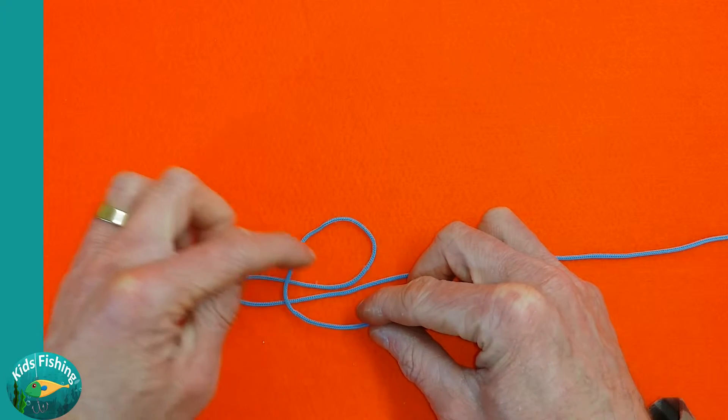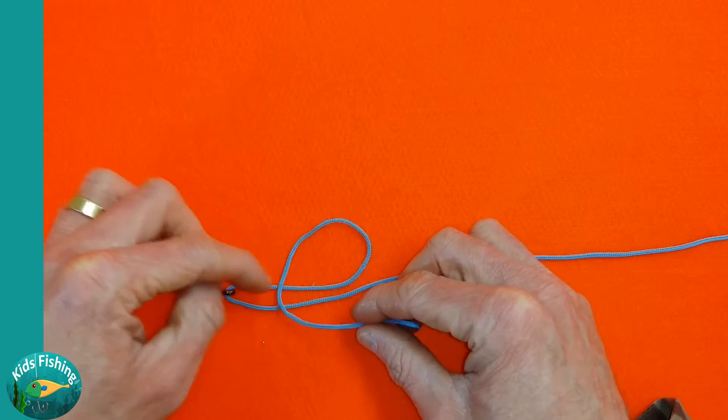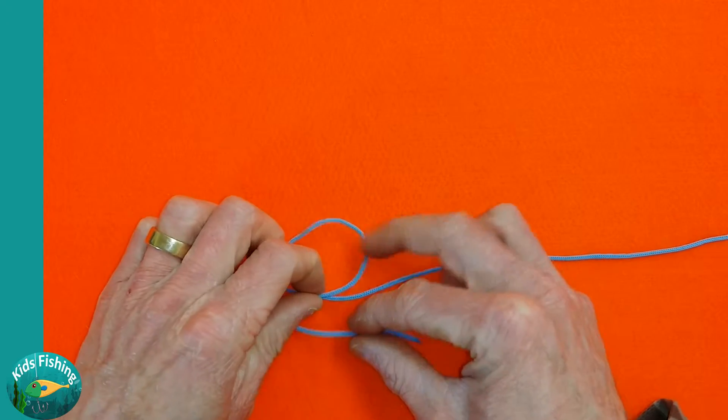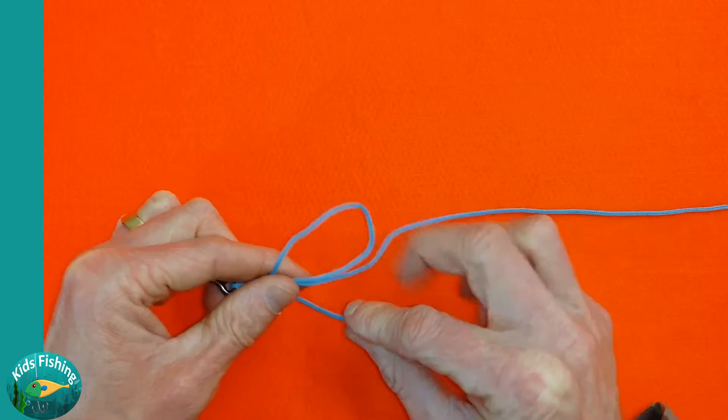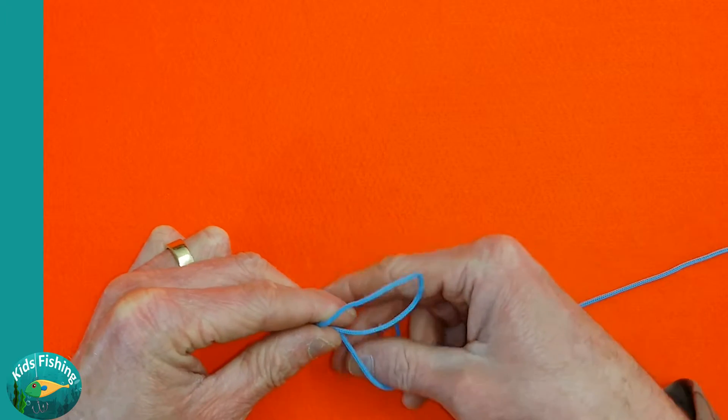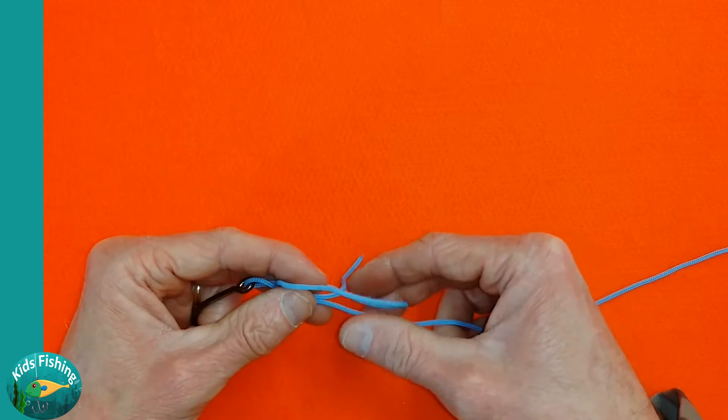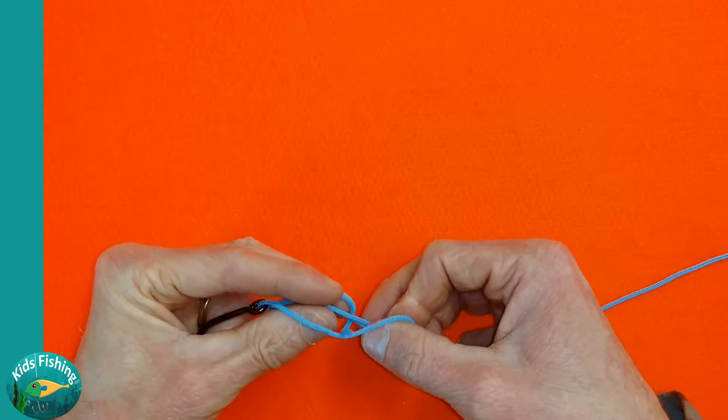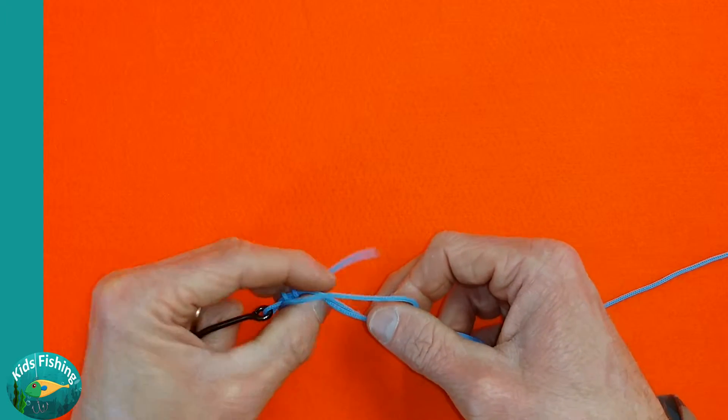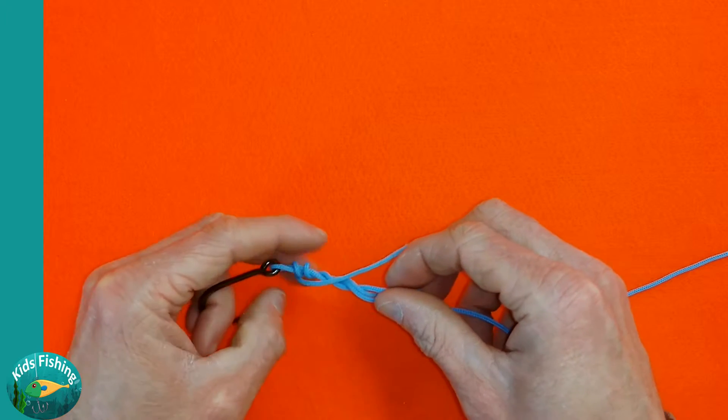Similar to the surgeon's knot, this knot uses a wrapping effect, and the great thing about this type of knot is that it retains most of its strength, which is excellent. So now we're just going to wrap the line through and we're going to do three wraps. We just pull the tag end down and as you'll see the knot binds up.